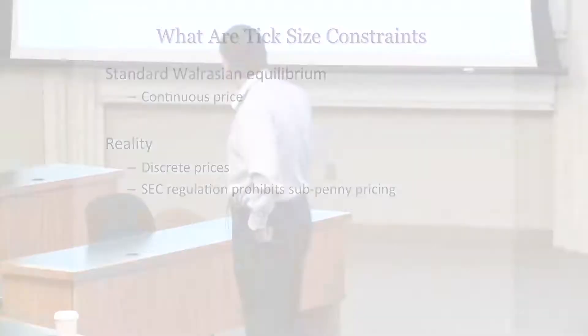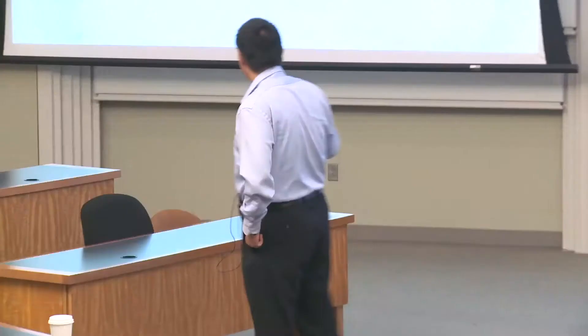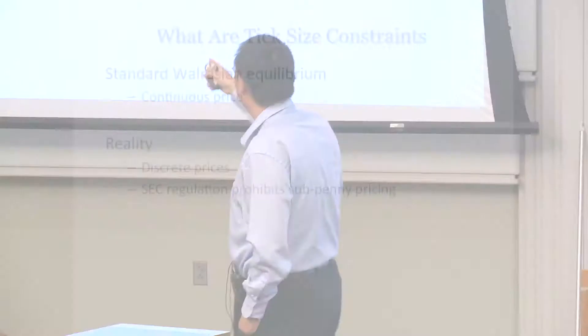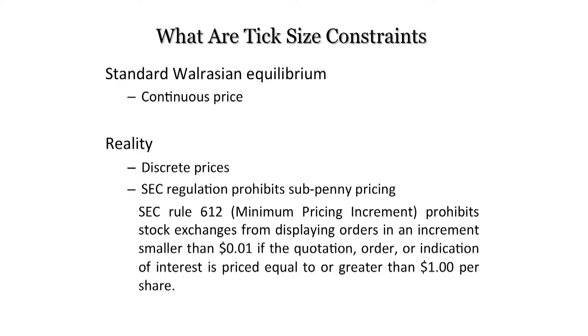First, I want to introduce a concept: what are tick size constraints? Think about the Walrasian economic model we learn. There's an implicit but important assumption that price is continuous. But in reality, price is not continuous — we have discrete prices. Why? There are different reasons, but one major reason is that the market is not designed by us. Sometimes it's designed by regulators. There's a rule called SEC Rule 612 that prohibits sub-penny pricing.